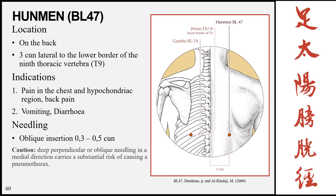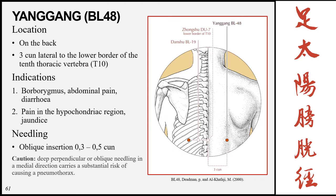Next is Hunmen, Bladder 47, located on the back three cun lateral to the lower border of the ninth thoracic vertebra. Note that T8 is skipped — there is no point lateral to T8. Indications are related to its location: back pain, pain in the chest and hypochondriac region, vomiting, and diarrhea. Needling is oblique insertion 0.3 to 0.5 cun with caution against deep perpendicular or oblique medial needling.